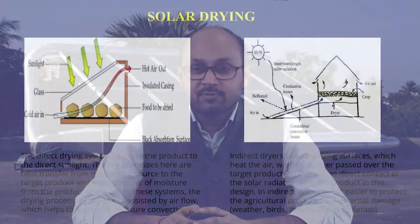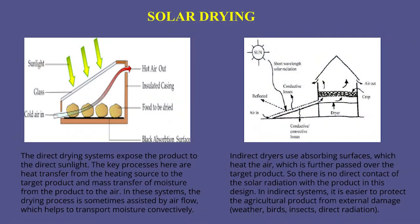In the indirect type solar dryer, an absorbing surface heats the air which is further passed over the target product. So there is no direct contact of solar radiation with the product. In indirect solar dryer systems, it is easier to protect the agriculture product from external damage since there is no direct heating, so you can avoid overheating of the material.